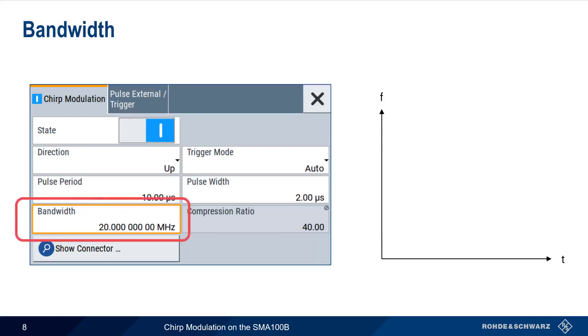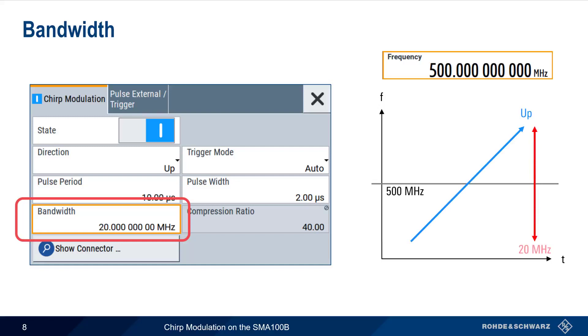Bandwidth is the modulation bandwidth in hertz, or the distance between maximum and minimum frequency of the chirp. For example, if our SMA center frequency is set to 500 MHz, and our chirped signal is an upchirp with a bandwidth of 20 MHz, then the pulse will have a lower or starting frequency of 490 MHz, and an upper or stopping frequency of 510 MHz. Note that the maximum configurable chirp bandwidth depends on the current center frequency of the SMA.